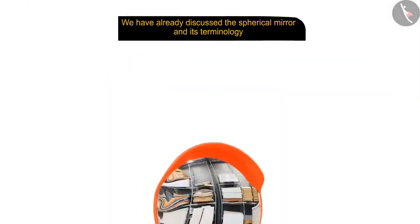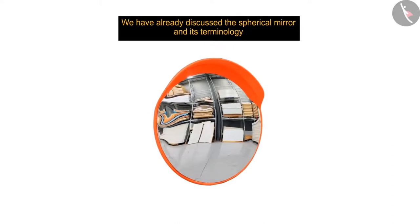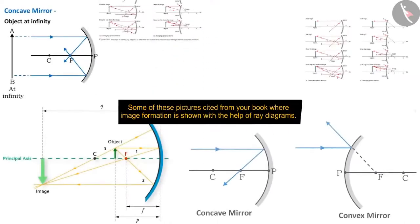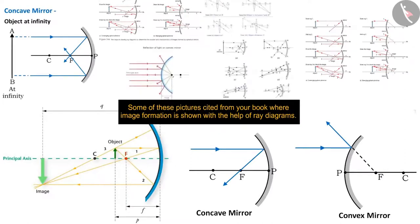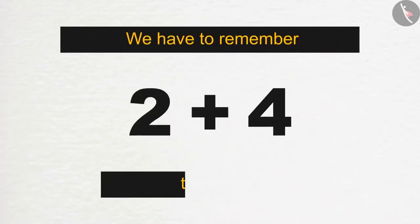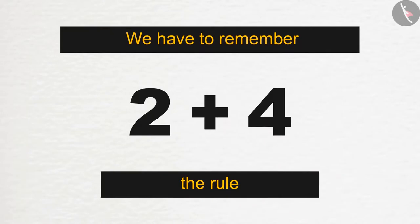Let's move forward. We have already discussed the spherical mirror and its terminology. Today we will discuss representation of images formed by mirrors and the cases of convex mirrors. You must be familiar with some of these pictures cited from your book where image formation is shown with the help of ray diagrams. To understand these diagrams, we have to remember the rule of 2 plus 4, where 2 is the number of rays and 4 is the number of cases. To make any ray diagram, we need 2 rays of light which could be taken from any of these 4 cases.